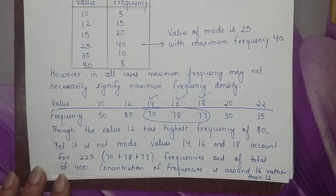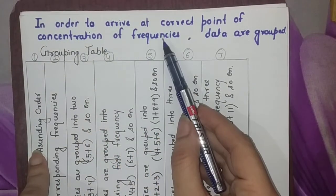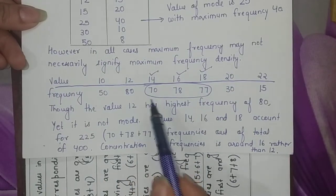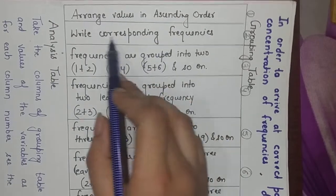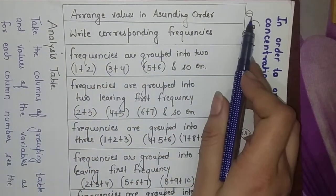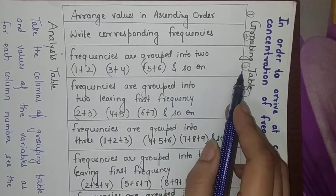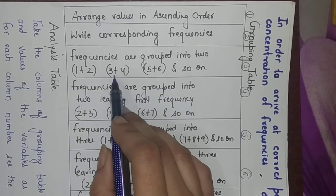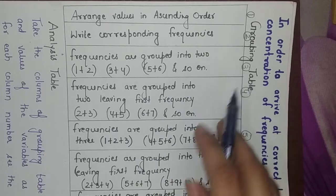The solution is that we have to use a grouping table. Let me show you theoretically how the grouping table is made. First, values must be arranged in ascending order in the first column. Second column contains the matching corresponding frequencies. In the third column, frequencies are grouped into pairs - first plus second frequency, third plus fourth frequency, fifth plus sixth frequency, and so on.